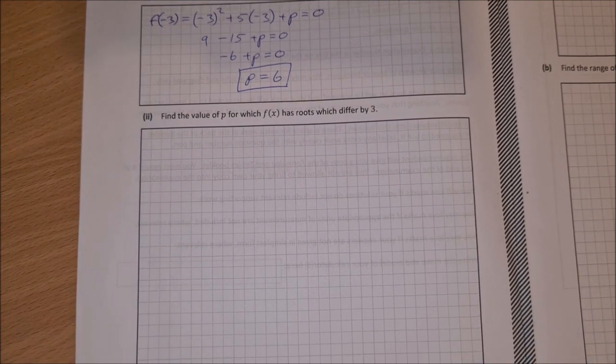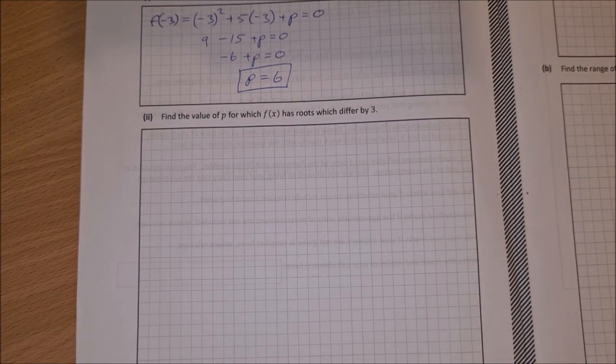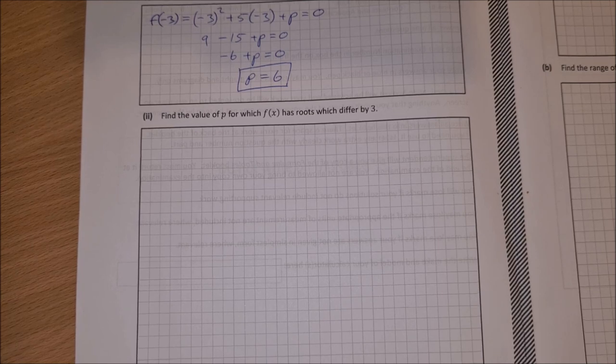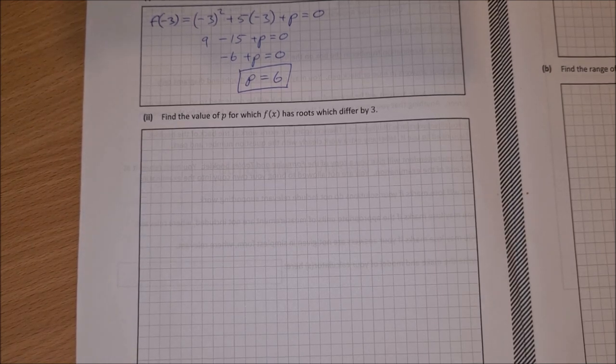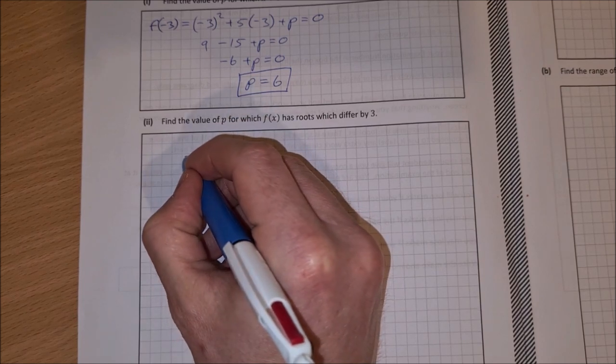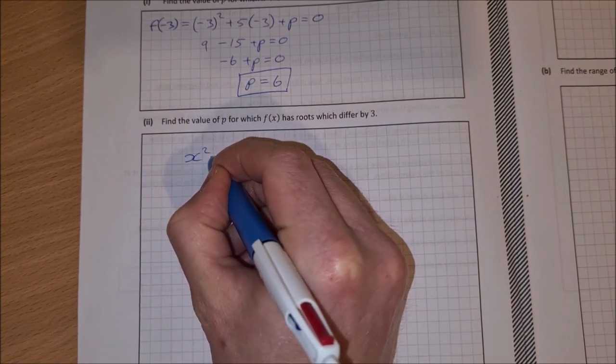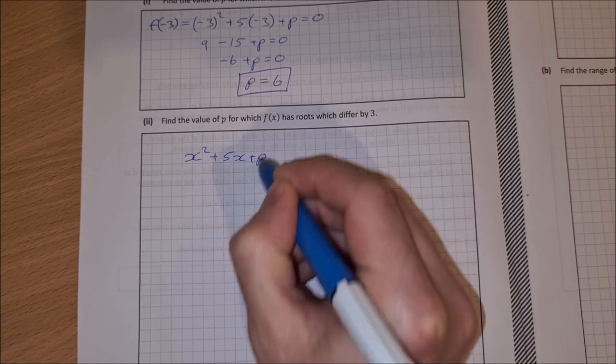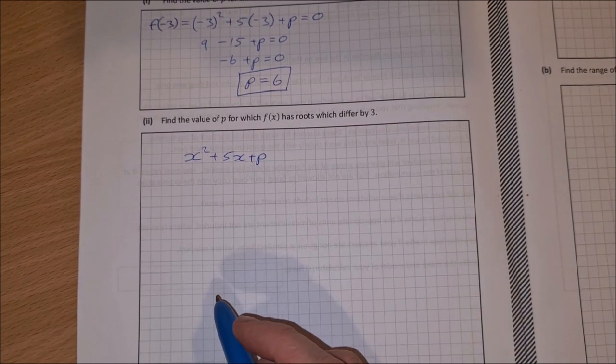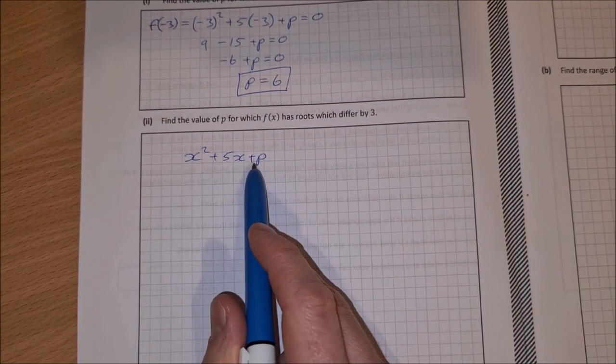Part 2, find the value of p for which f(x) has roots which differ by 3. Now there's a few ways you can do this. The easiest way is if we have x squared plus 5x plus p, and we look to factorize this.